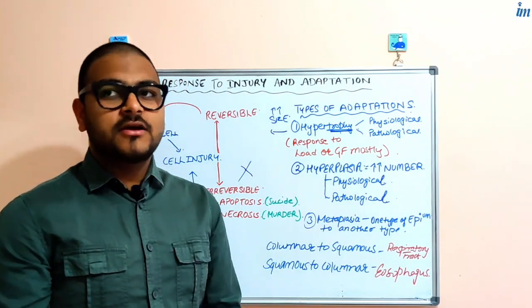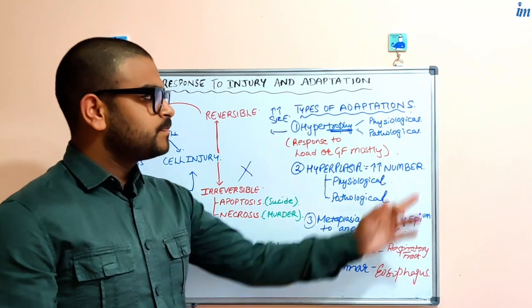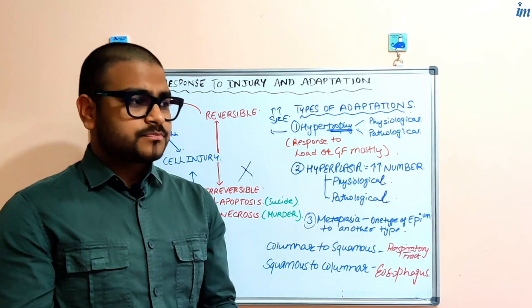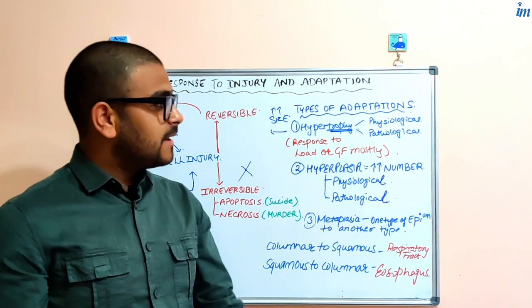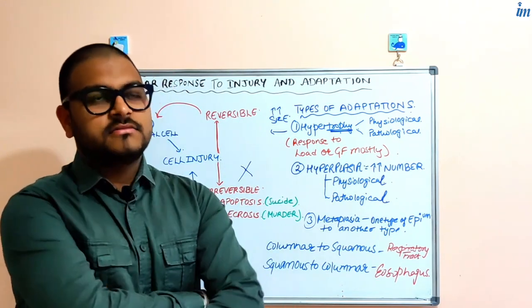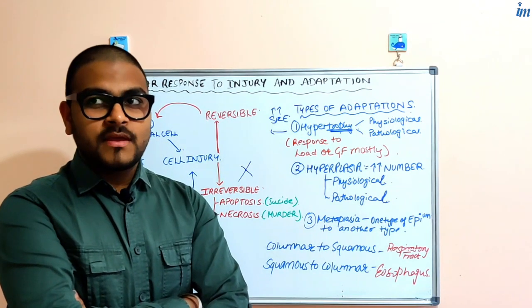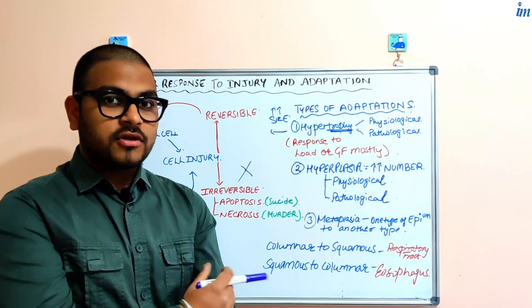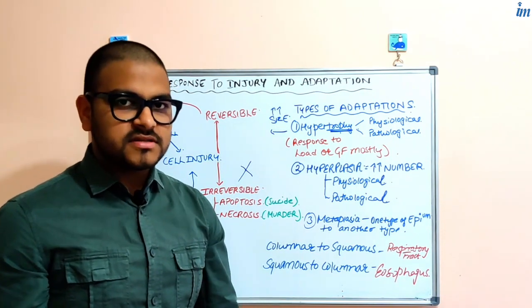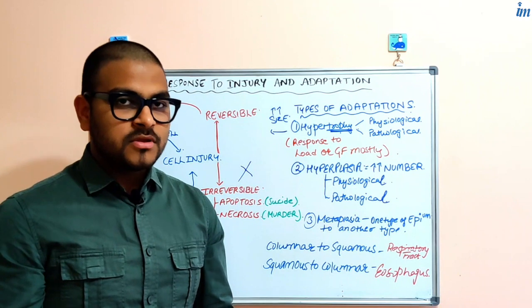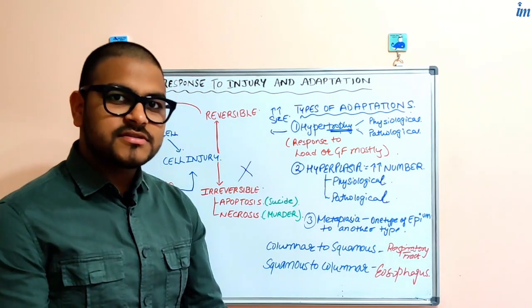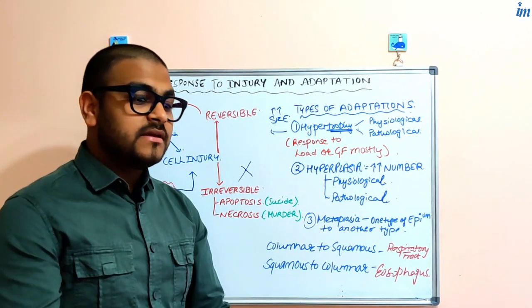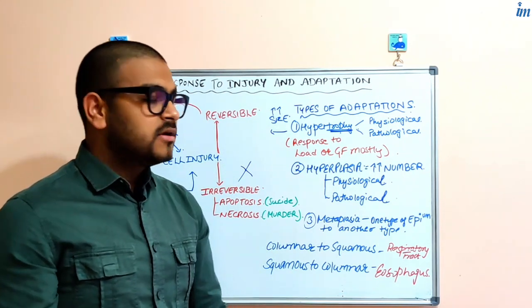The increase can be physiological or pathological. It can be physiological in what case? As all of us know, gym bodybuilders have load on their biceps and other muscles when they are lifting weights in the gym. So it's a physiological process and in order to counter and balance and be adaptable to that load, the skeletal muscles undergo hypertrophy.